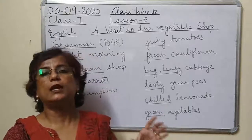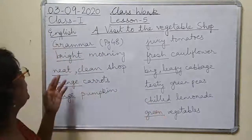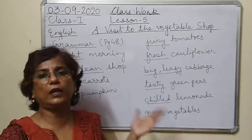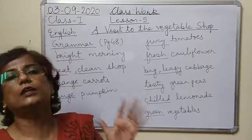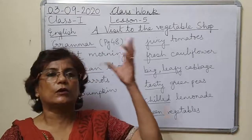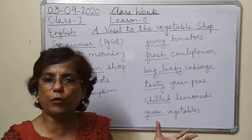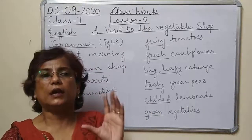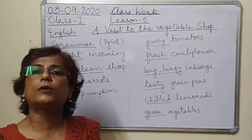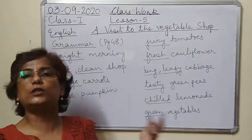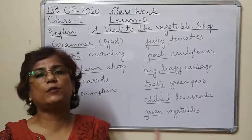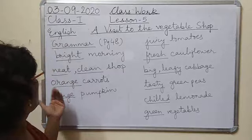For example, 'bright morning' — the morning was very bright. 'Neat and clean shop' — how was the shop? The shop was very neat and clean. Now if I just say 'morning,' how do you know whether it was a bright morning, or a rainy morning, or a cloudy morning? But when I say 'bright,' it is specific — the morning was very very bright.